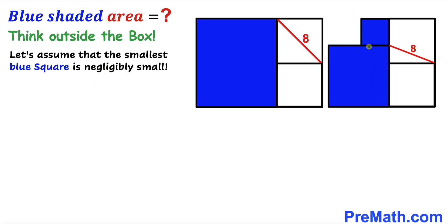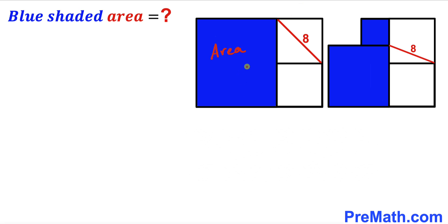As a result, our blue shaded region becomes this whole big square, as you can see in this new diagram. Now we're going to calculate the area of this blue shaded square. Here's our next step.